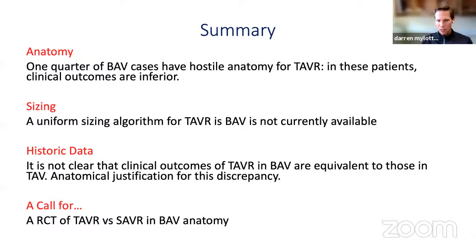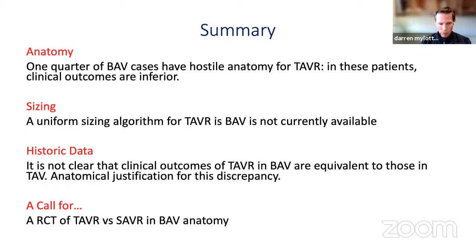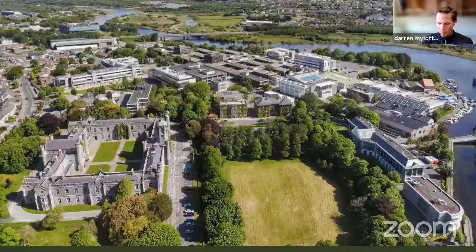To summarize: In terms of anatomy, one quarter of BAV patients have hostile anatomy, and in those patients clinical outcomes seem inferior. A uniform sizing algorithm for TAVR in bicuspid is not currently available and remains a significant shortcoming. From observational data, it's not clear that clinical outcomes of TAVR in bicuspid are equivalent to those in tricuspid. There is anatomical justification that results may be inferior in bicuspid compared to tricuspid, and we need a randomized trial of TAVR versus SAVR in bicuspid aortic valve anatomy, particularly for younger patients, before expanding this technology to those cohorts.